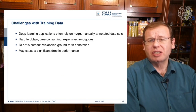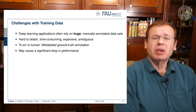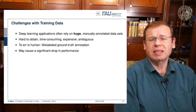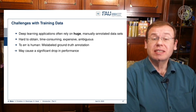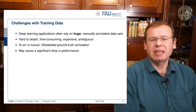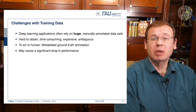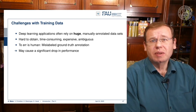There are a couple of challenges, and one major challenge is training data. Deep learning applications require huge manually annotated datasets, and these are hard to obtain. Annotation is time-consuming, expensive, and often ambiguous. As you've seen already in the ImageNet challenge, sometimes it's not clear which label to assign, and obviously you would have to assign a distribution of labels.